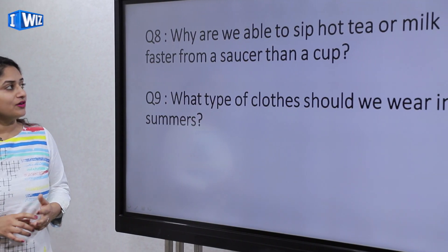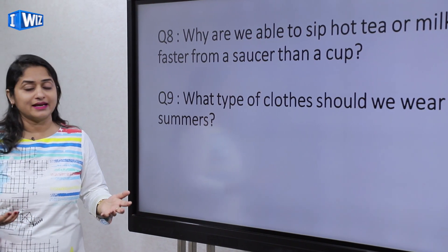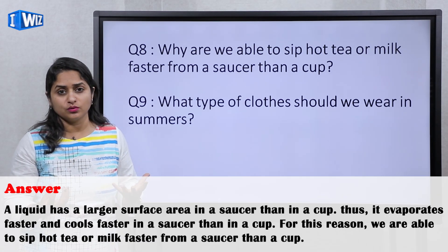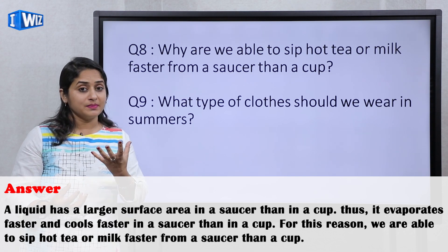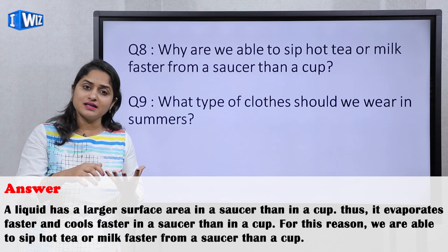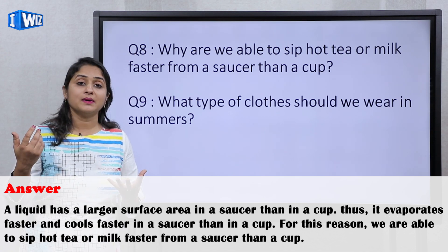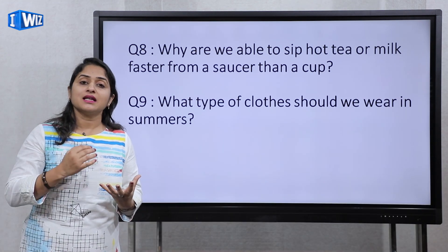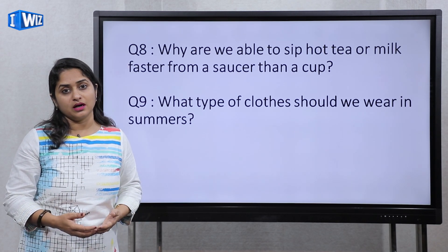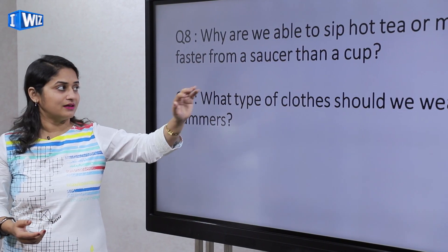Your tea will cool faster if you take it in a saucer because the surface area is greater, giving more space for evaporation. As we studied in factors affecting evaporation, the greater the surface area, the faster the liquid evaporates. So if you want to keep it hot longer, drink it from a cup, not a saucer.